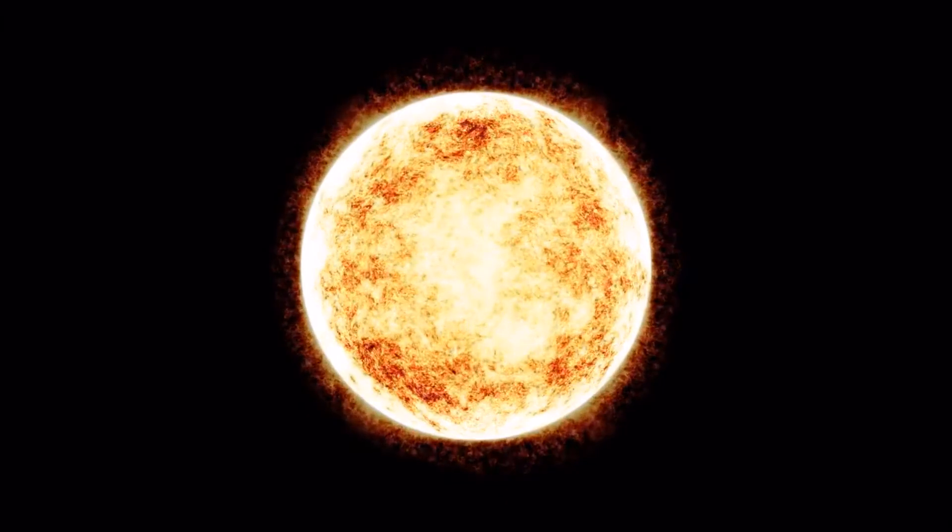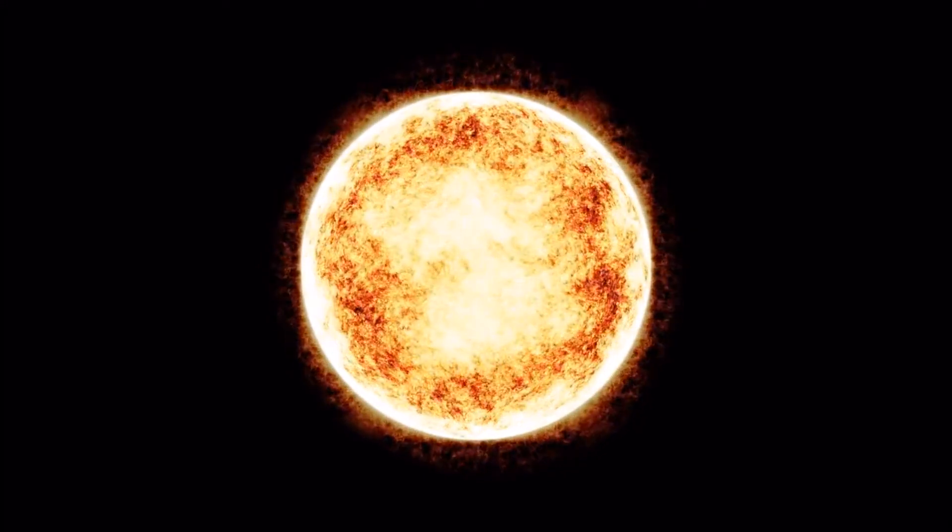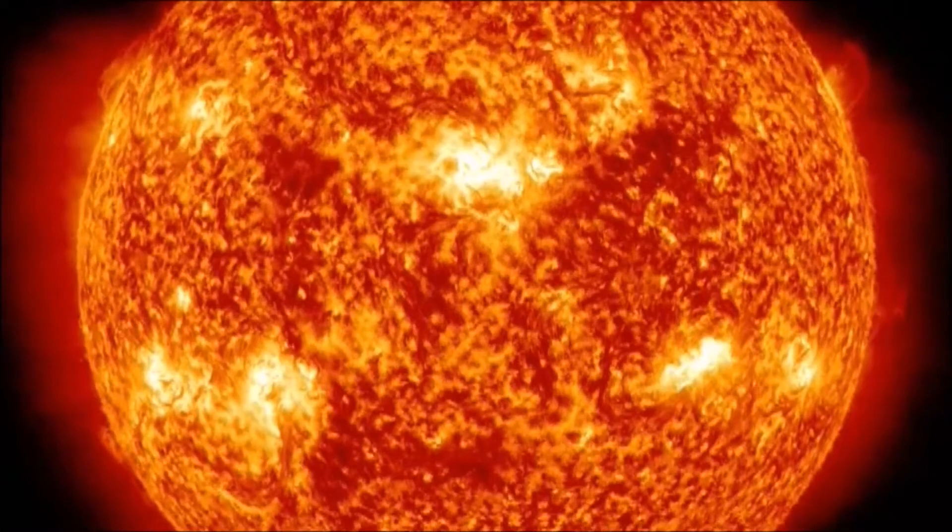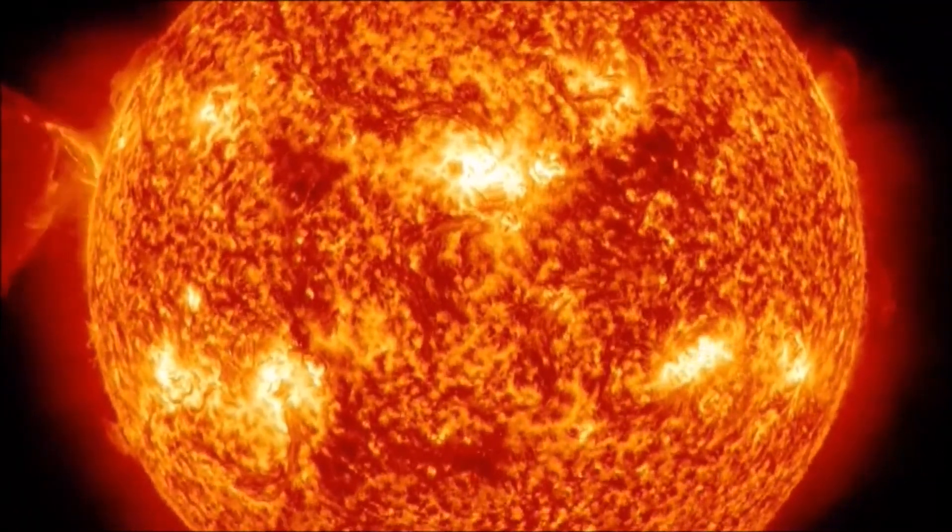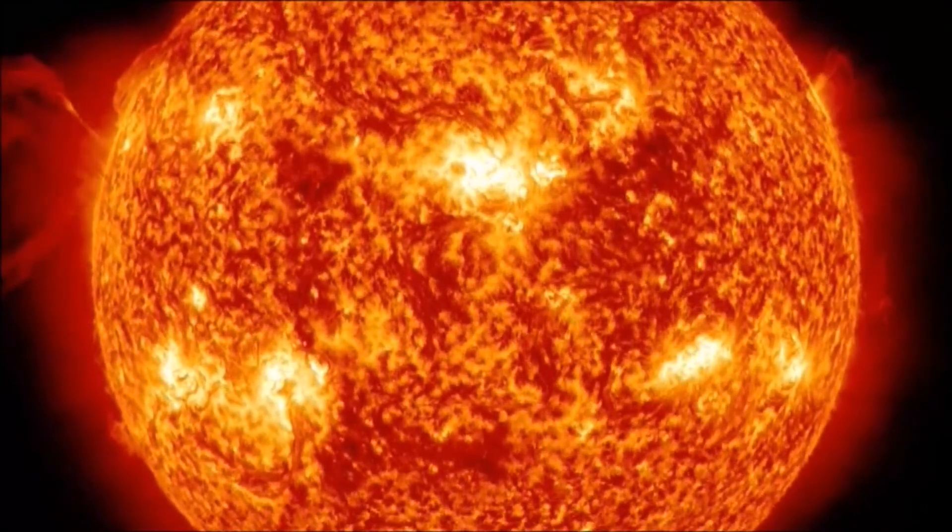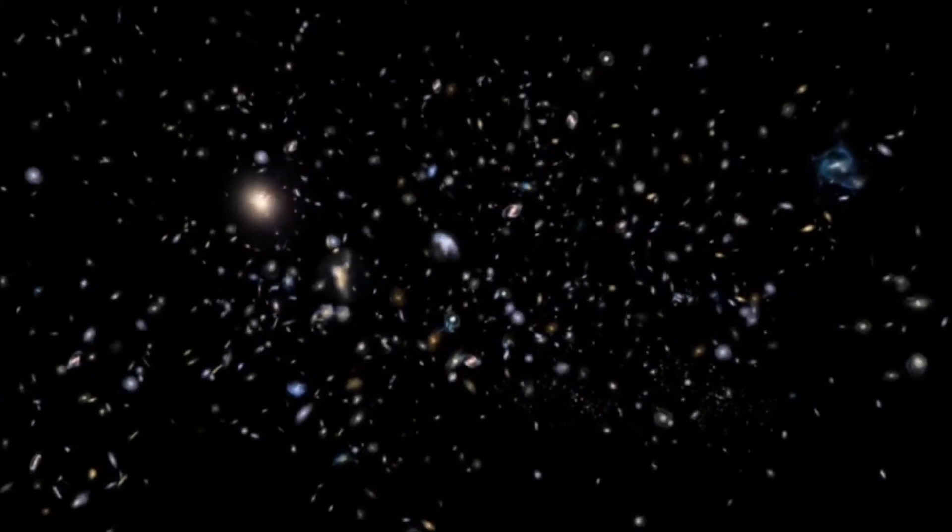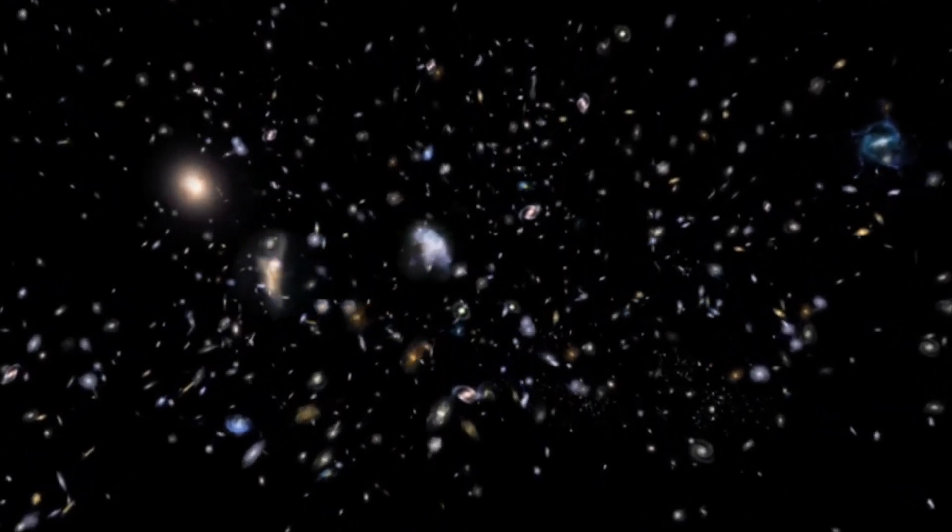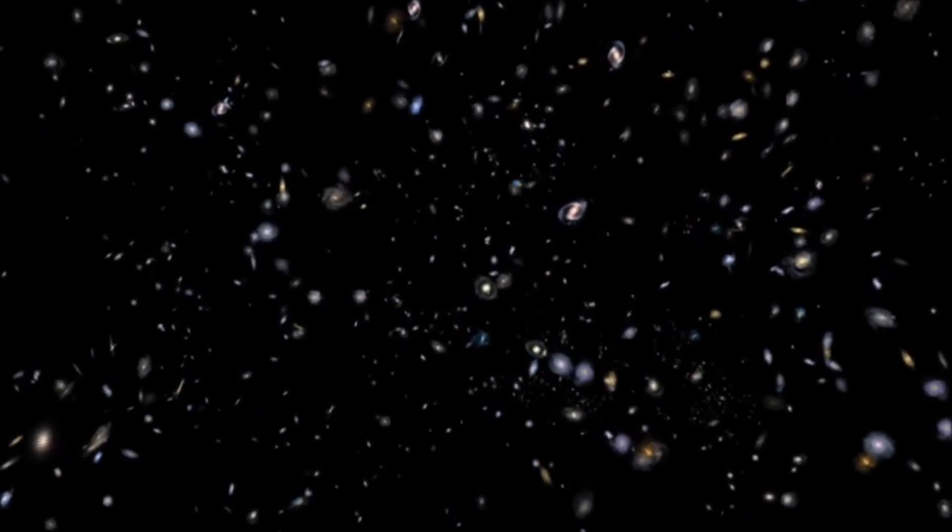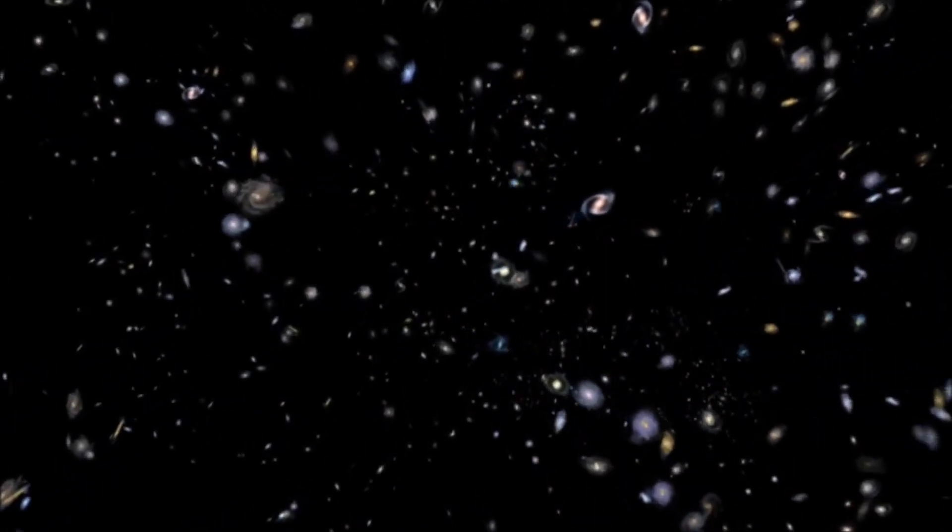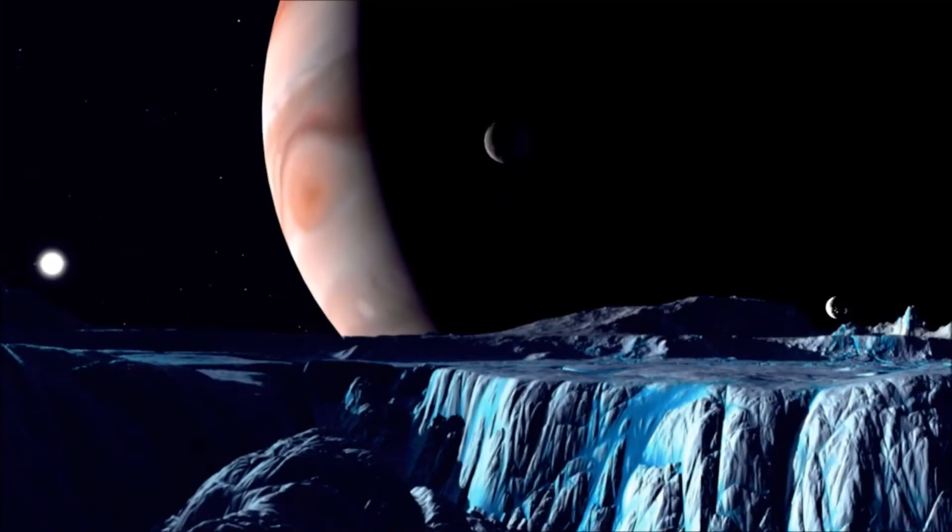The result is exciting since the search for extraterrestrial life will be equipped with several new, extremely powerful instruments within the coming years. This enhances the significance of understanding how planets are formed around different types of stars. Such results may pinpoint places which would be especially interesting to probe for the existence of life, says Professor Jess Christiane Jorgensen, Niels Bohr Institute, University of Copenhagen, who is heading the project.